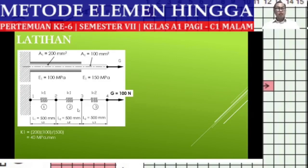Continuing to K2: using the same method, A = 100, E = 150, L = 500. We obtain K2 = 30 MPa.